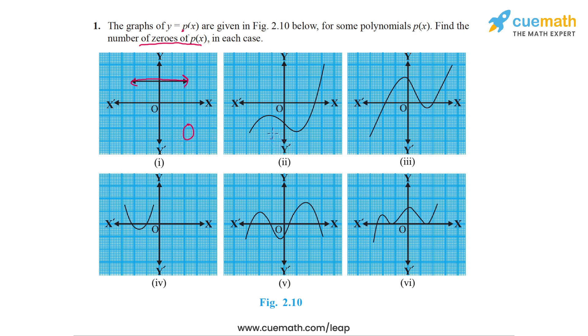Now in the second part, the graph crosses the x-axis precisely once at this point. So this graph, this polynomial has exactly one zero.